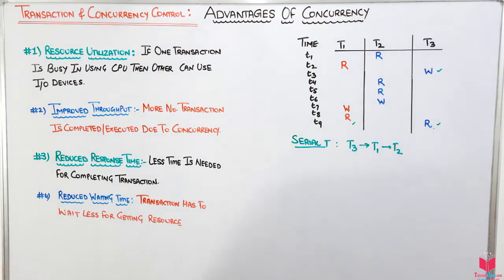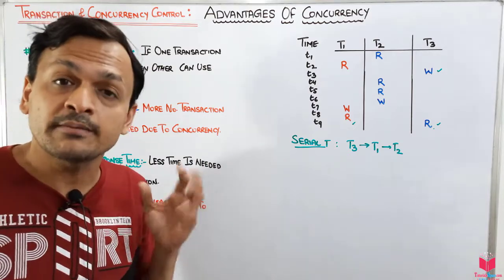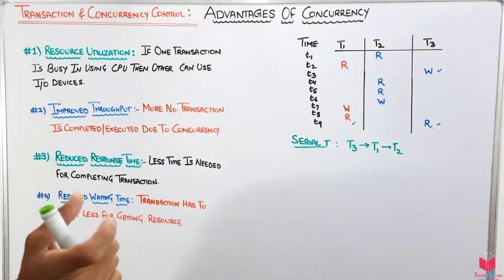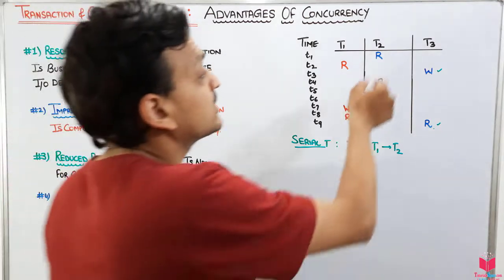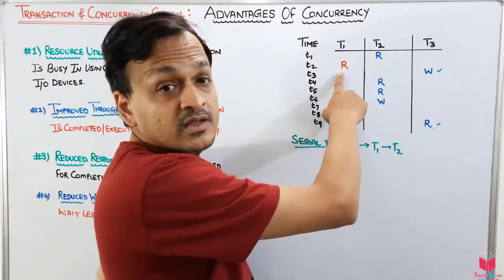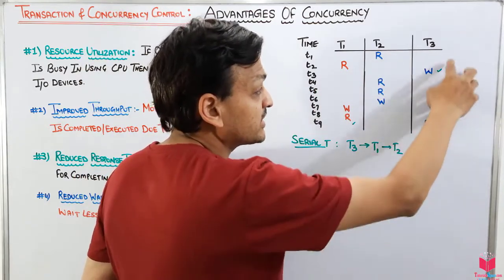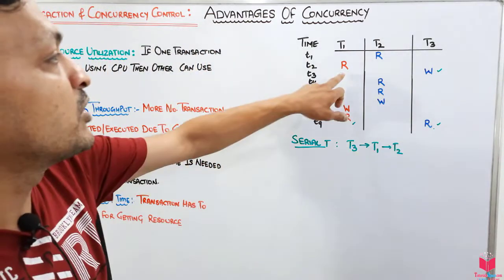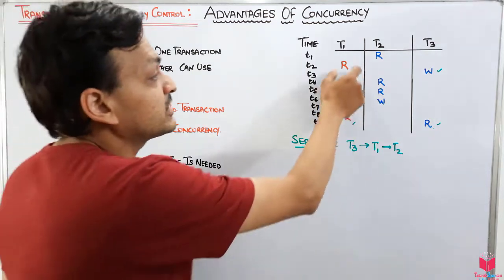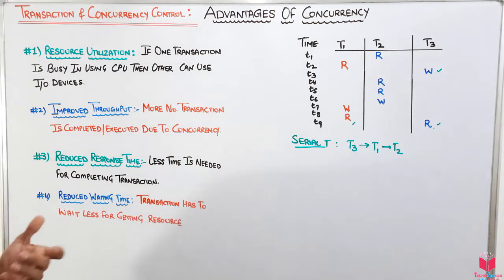The fourth advantage is reduced waiting time — transactions have to wait less to get resources. Some transactions are small and some are big. Waiting time is measured from when you submit a transaction to when it gets its first response. Because small parts of transactions execute in each time slot, a transaction gets resources much earlier compared to serial execution — where it would have to wait for all instructions of previous transactions to finish. This is how concurrency reduces waiting time.